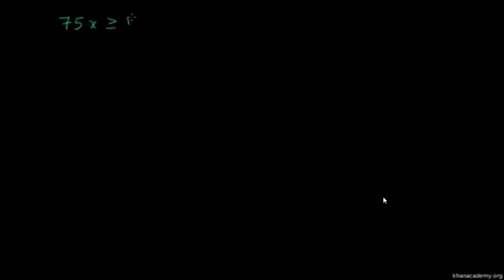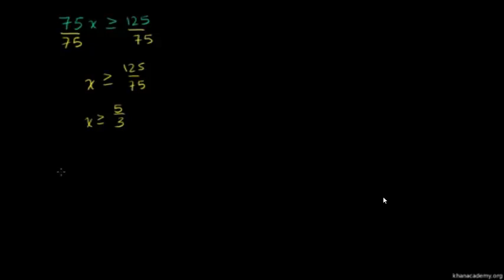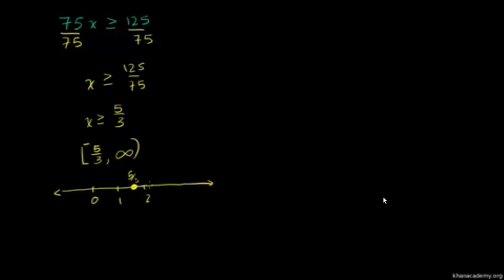Let's do another example: 75x is greater than or equal to 125. We can divide both sides by 75 — since 75 is positive, we don't change the inequality — giving x is greater than or equal to 125 over 75. Dividing numerator and denominator by 25, that simplifies to 5 over 3. So x is greater than or equal to 5 thirds. On a number line, 5 thirds is 1 and 2 thirds, so we place a closed dot there and shade everything to the right.